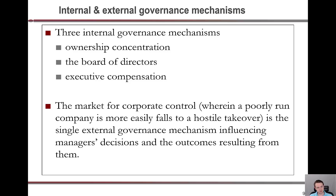There are three internal and one external governance mechanism. The internal mechanisms are ownership concentration, the board of directors, and executive compensation. The sole external mechanism is the market for corporate control, where a poorly run firm is easier to take over in a hostile bid — buying out enough stock to take over control, kick out current management, put in new management, thereby increasing profit and ultimately the share price.